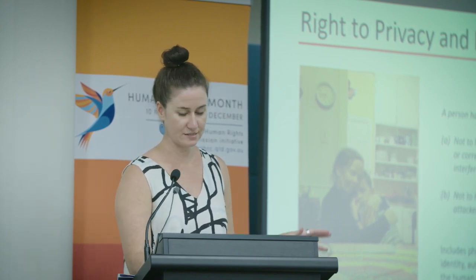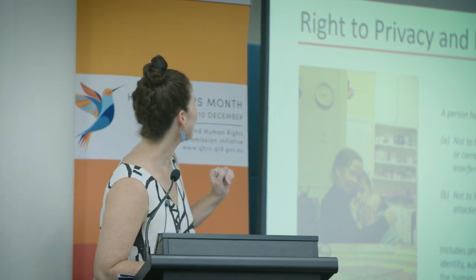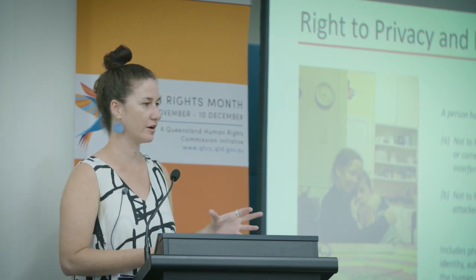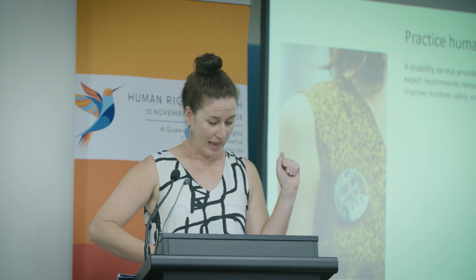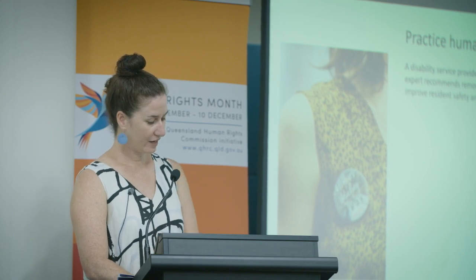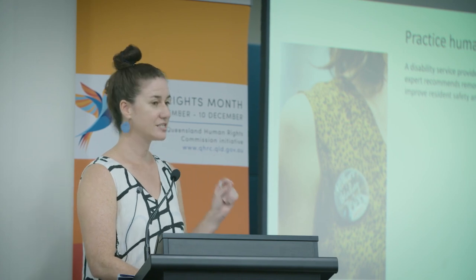What I want to do is take you through one example of how to apply the human rights decision making process to a scenario. A disability service provider has a client slip and injure himself while showering. A workplace health and safety expert recommends removing shower curtains and keeping the doors open during showering to improve resident safety and make it possible for staff to respond rapidly in an emergency. This is not a real case — it is quite extreme because I want to be able to process through it. Most of you are probably jumping right to the end about whether this can be done and be compliant with human rights, but let us stick with the decision making process.